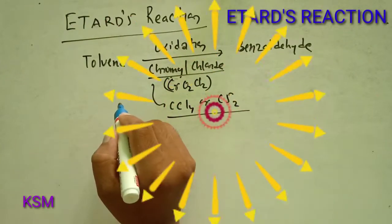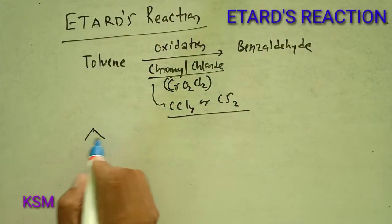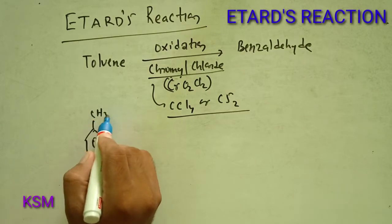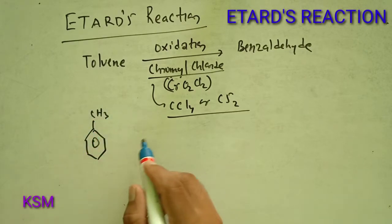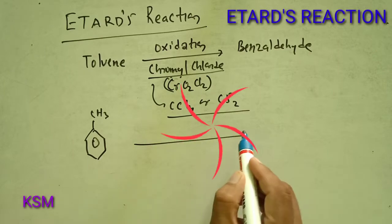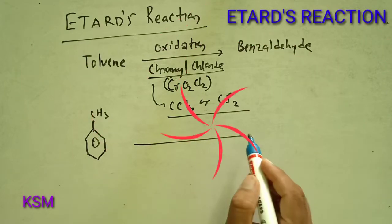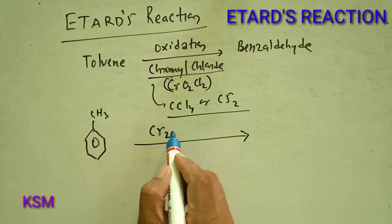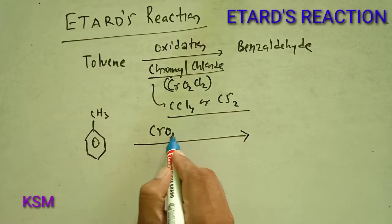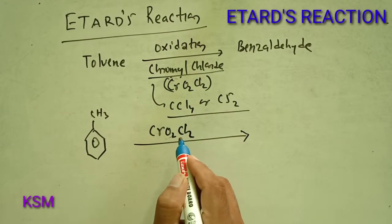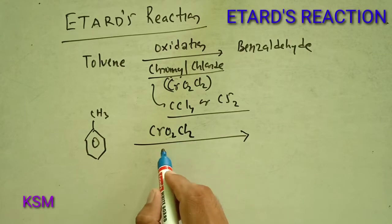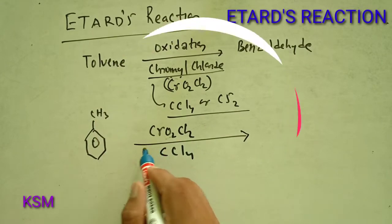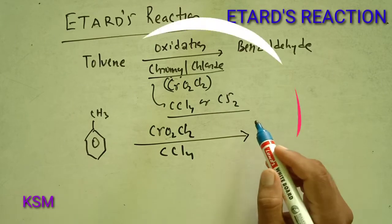Let's see the reaction. Toluene's formula is a benzene ring to which a methyl group is attached — it is called toluene. When toluene is treated with chromyl chloride CrO₂Cl₂ in the presence of carbon tetrachloride, it undergoes oxidation.